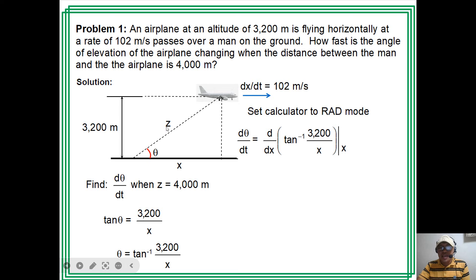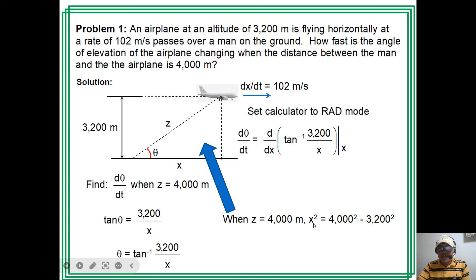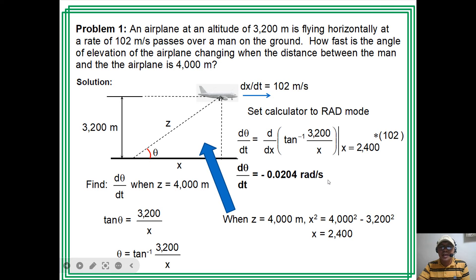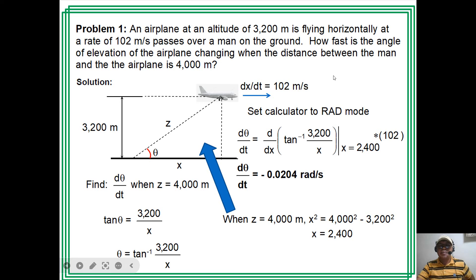The given value is z = 4,000, so from the triangle: x² = 4000² − 3200², giving x = 2,400 meters. So dθ/dt is the derivative of arctan(3200/x) evaluated at x = 2,400, multiplied by dx/dt = 102. Pressing the calculator gives −0.0204 radians per second. The negative sign indicates the angle of elevation is decreasing as the airplane moves away.